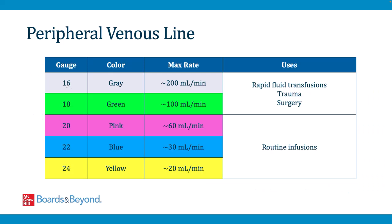IVs come in different sizes called gauges and can come in different lengths to reach deeper veins. Larger bore IVs are more uncomfortable and harder to place, as they need bigger veins. However, they have a faster maximum rate of fluid delivery. A 16-gauge IV can deliver fluids at a maximum rate of 200 mL per minute, meaning a 1-liter fluid bolus can be given in just 5 minutes. More common 20- or 22-gauge IVs can only deliver fluids at 30–60 mL per minute.